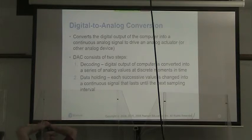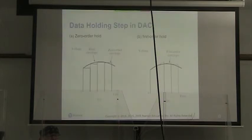Digital to analog converts digital output of a computer into a continuous analog signal to drive an analog actuator or some other kind of analog device. Our digital to analog converter has two steps. First is decoding. The digital output of the computer is converted into a series of analog values at discrete moments in time. And then data holding. Each successive value is changed into a continuous signal, and that is going to last until the next sampling interval.